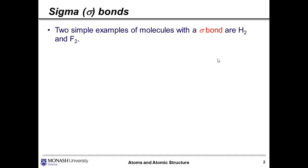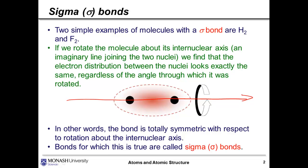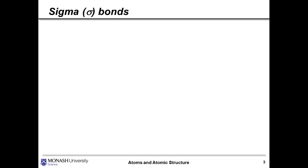We actually introduced sigma bonds during the week 3 lectures. Two simple examples of molecules with a sigma bond are diatomic hydrogen and diatomic fluorine. We saw that if we rotate the molecule about its internuclear axis, that is, an imaginary line joining the two nuclei, we find that the electron distribution between the nuclei looks exactly the same, regardless of the angle through which it was rotated. In other words, the bond is totally symmetric with respect to rotation about the internuclear axis. And bonds for which this is true are called sigma bonds.